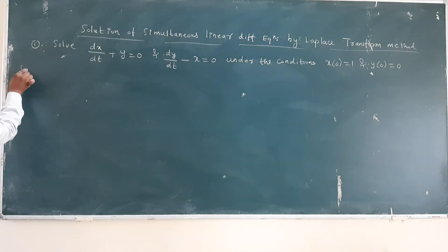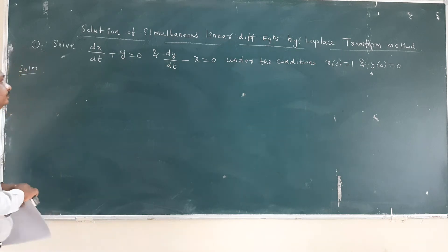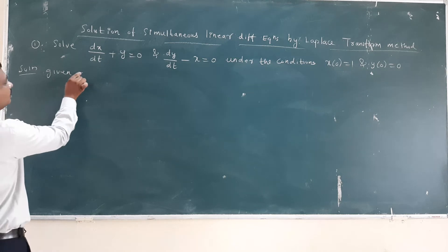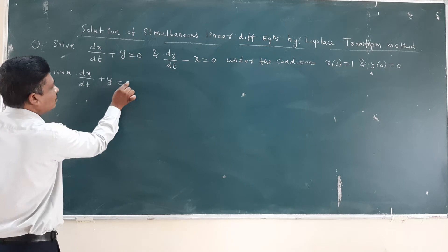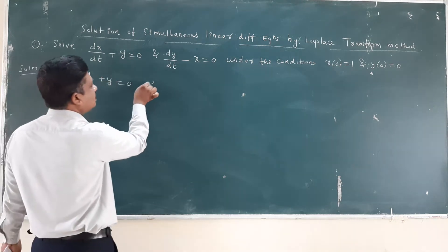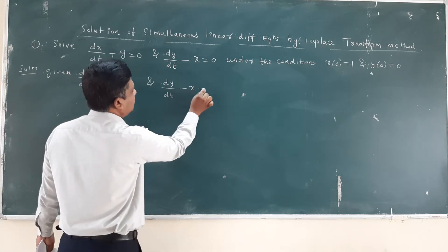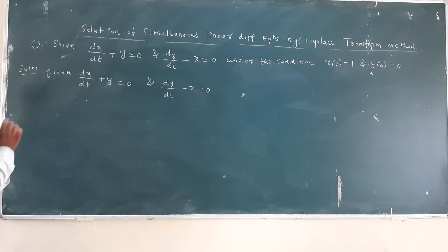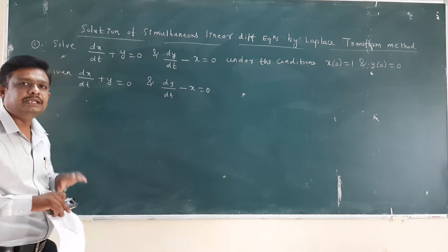So we will take the solution. Here you can observe we are given with two linear differential equations. Given: dx/dt + y = 0 and dy/dt - x = 0. First I will write these two differential equations in the operator form.